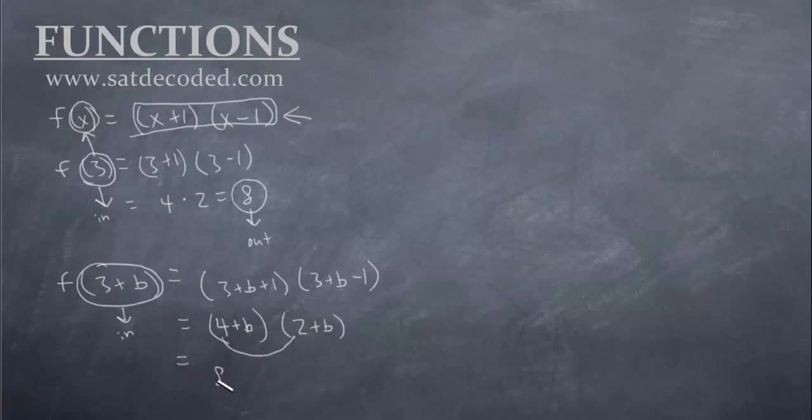First is 8 and then you do outer, so plus 4b. So plus 4b, inner plus 2b. And last, b times b, that becomes b squared. The middle part right here can be combined, so this whole thing equals 8 plus 6b plus b squared. So that whole thing right here is our output.